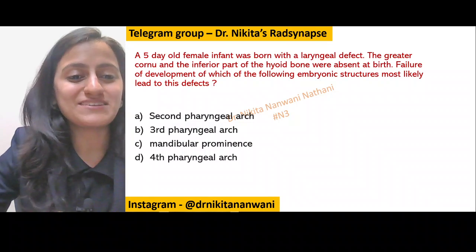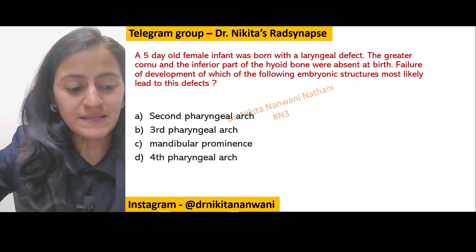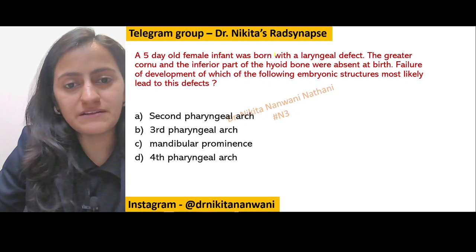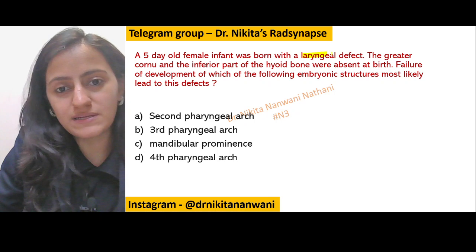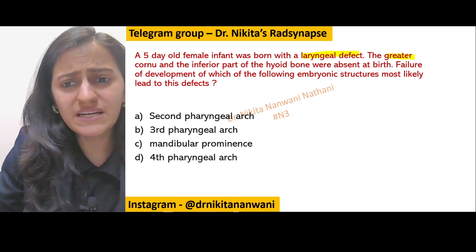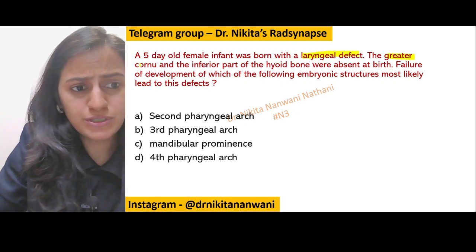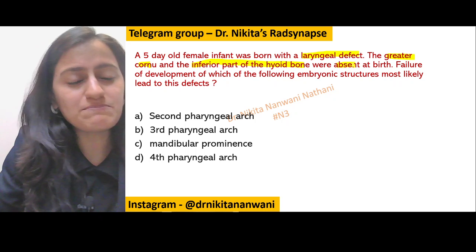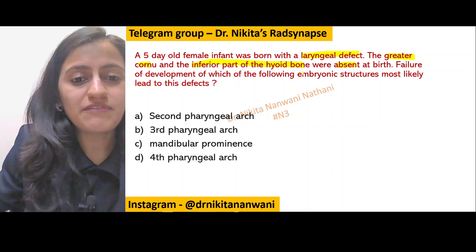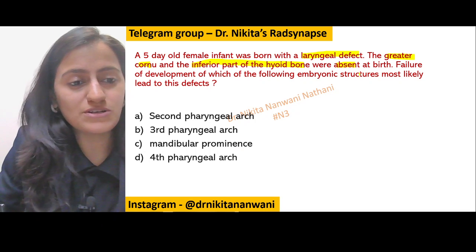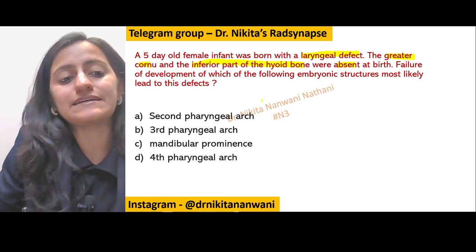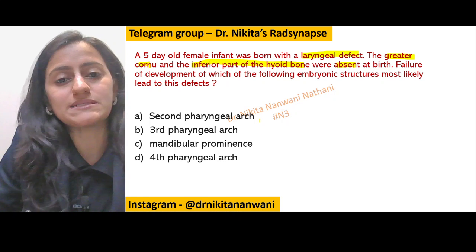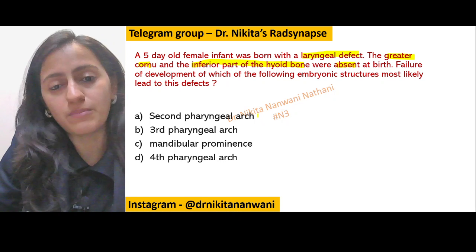Please try answering this question. A 5-day-old female infant was born with a laryngeal defect. The greater cornu and the inferior part of the hyoid bone were absent. Failure of which of the following embryonic structures most likely led to this defect? Is it the 2nd pharyngeal arch, 3rd, 4th, or is it the mandibular prominence?